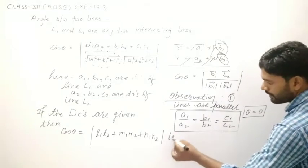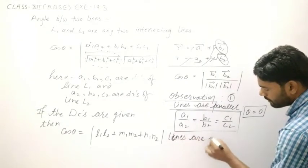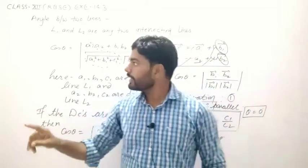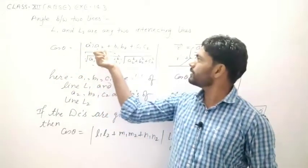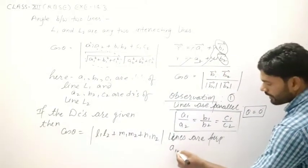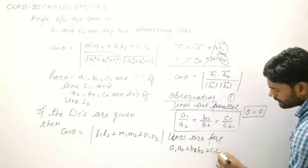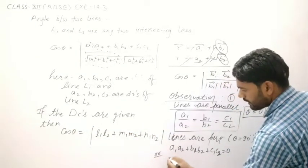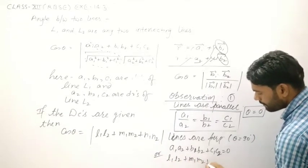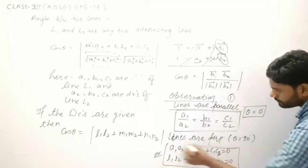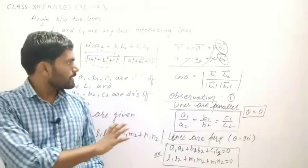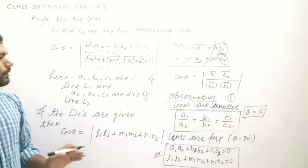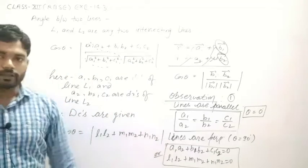If lines are perpendicular, then θ = 90°. Since cos 90° = 0, the numerator must equal zero, giving us the condition: a₁a₂ + b₁b₂ + c₁c₂ = 0. This condition holds when theta is 90 degrees, meaning the lines are perpendicular to each other.